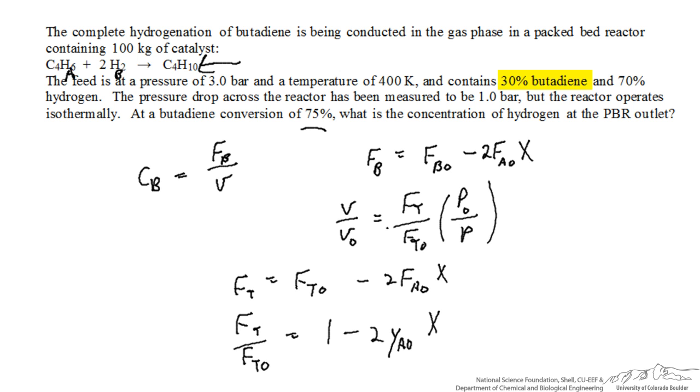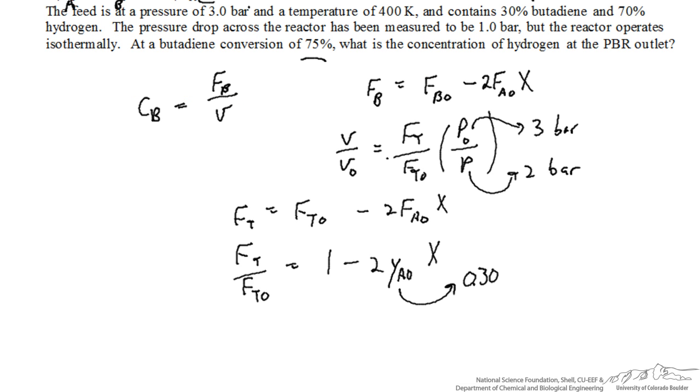The feed contains 30% butadiene, and so ultimately we can plug in a value of 0.30 here. Now we just need to plug in information on P0 over P, and we're given that the initial pressure is 3 bar, and the pressure drop is 1 bar, so the final pressure is 2 bar.